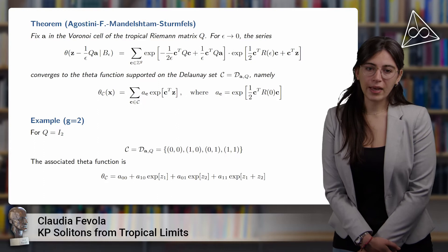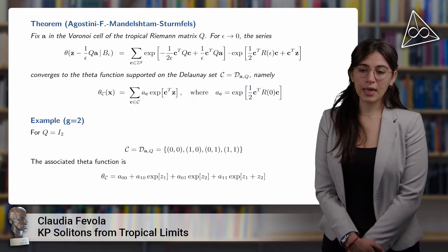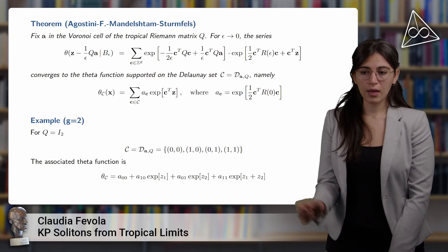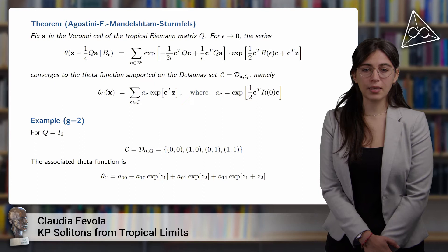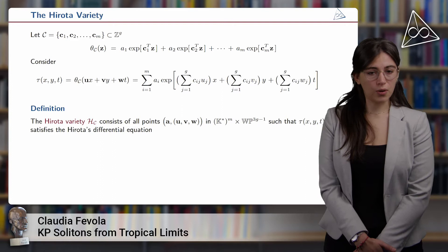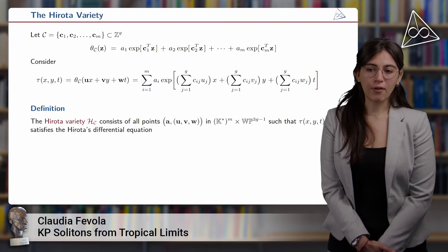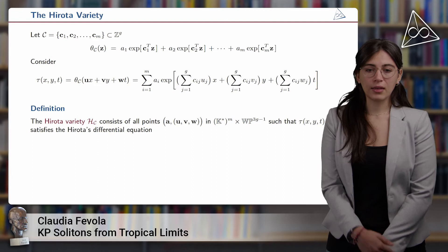For example, when the genus is equal to 2 and the matrix Q is given by the identity matrix, the Delaunay set is just the two-dimensional square given by these points. The associated theta function then becomes a sum of four exponentials. Once we have a Delaunay set, the theta function is a finite sum of exponentials and we can define the tau function arising from such a theta function.